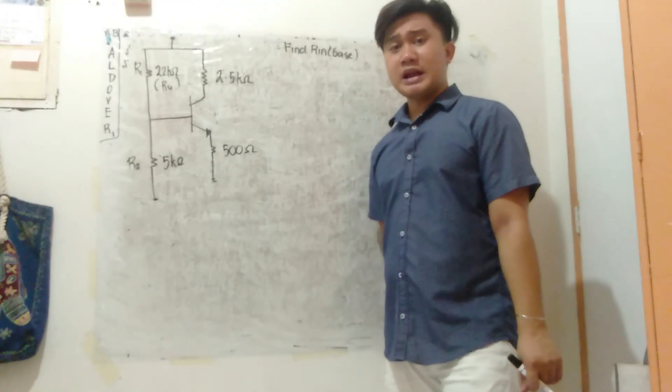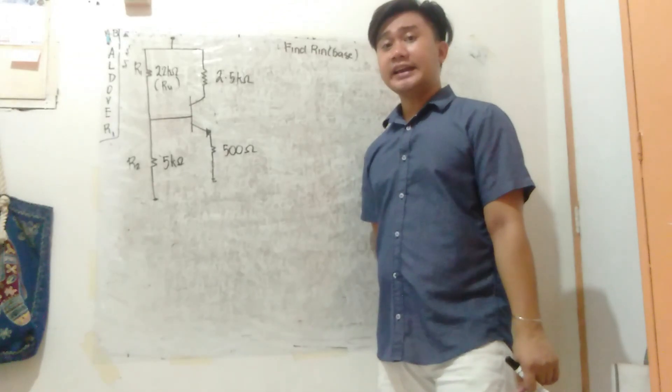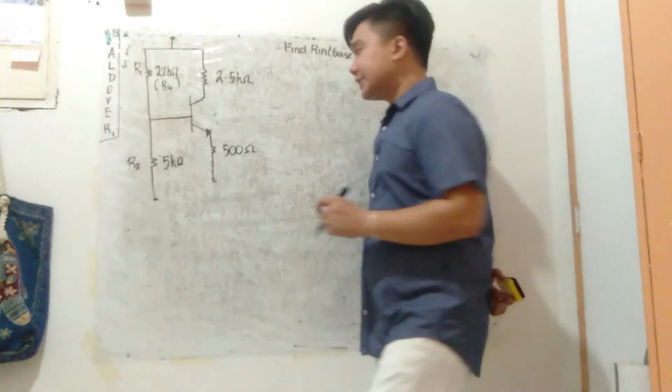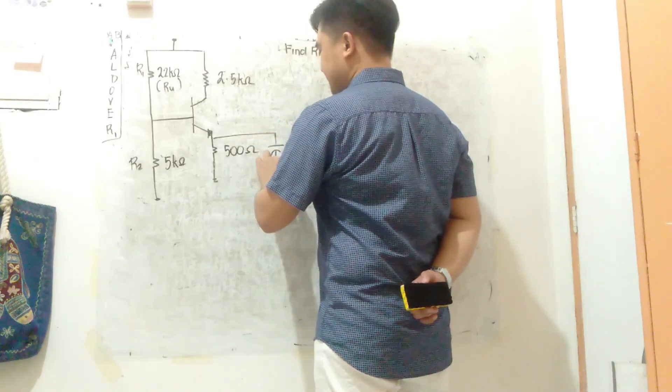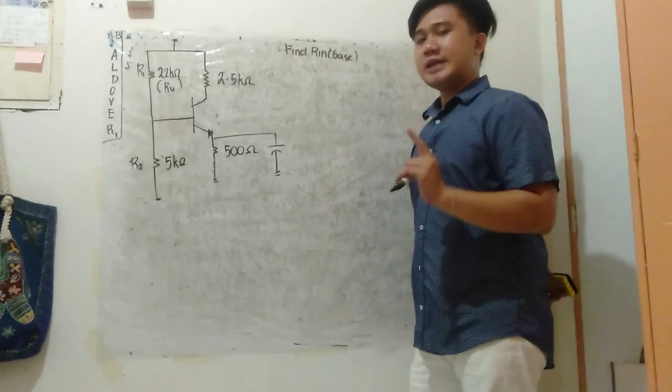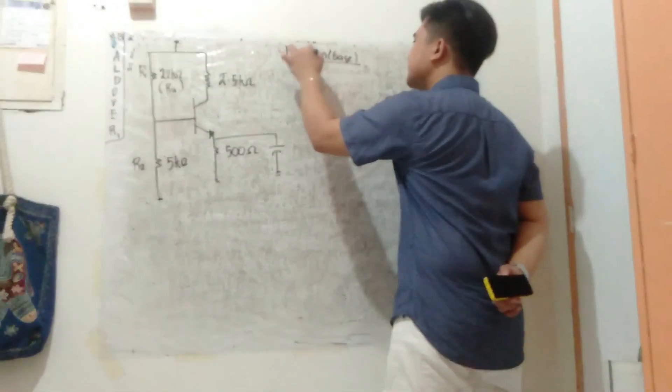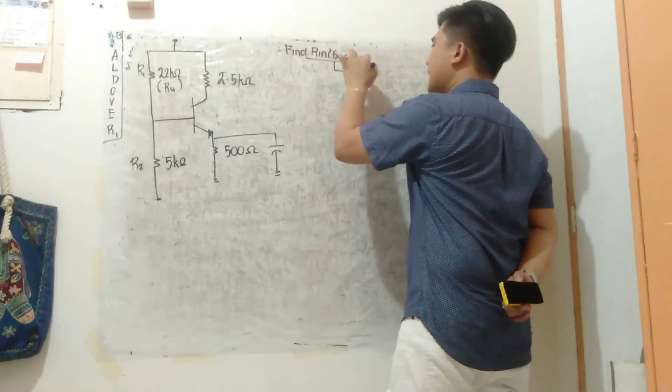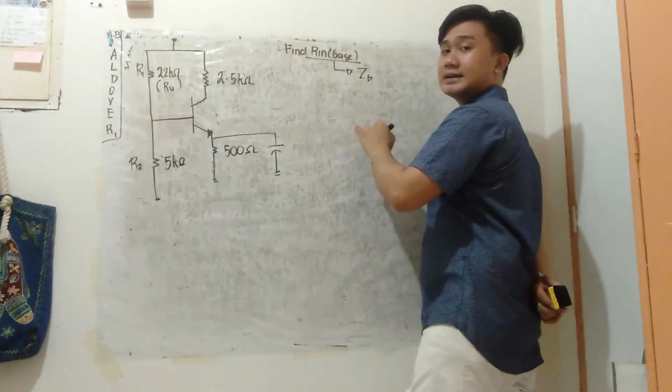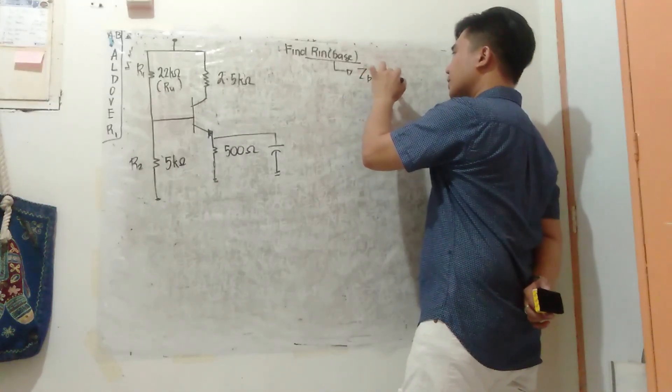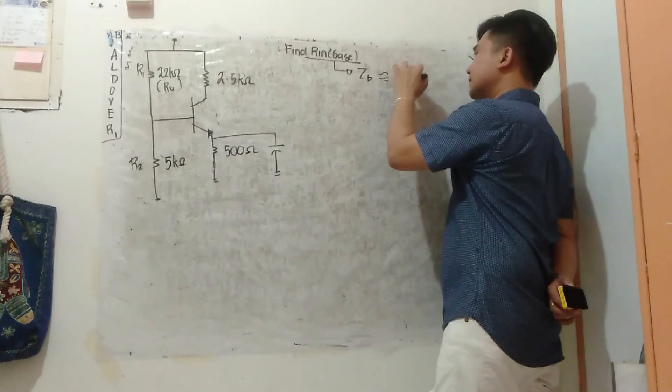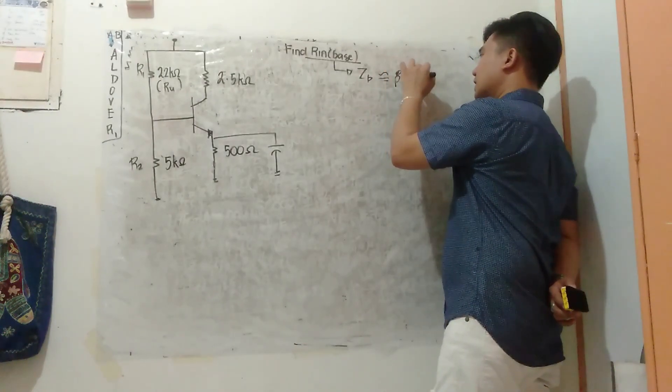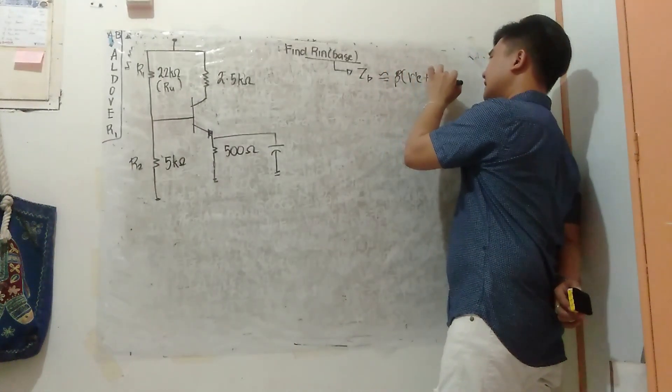This time guys, we're finding R_in base when we install a bypass capacitor. First, what is R_in base? R_in base is simply ZB. The value of ZB, if we compute the impedance at the base, is beta R'e plus R'e. We're given beta equals 100 and supply equals 20 volts.